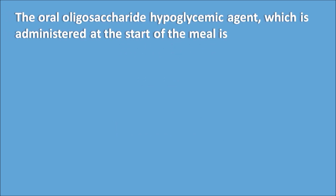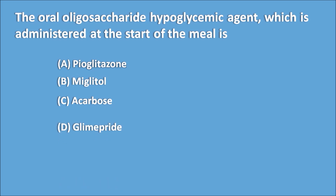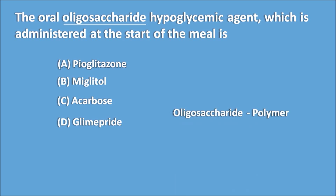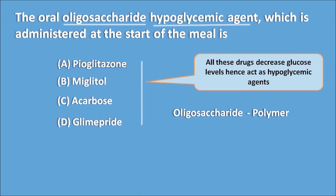First question: the oral oligosaccharide hypoglycemic agent which is administered at the start of the meal. Options are A. pioglitazone, B. miglitol, C. acarbose, and D. glimepiride. You can sometimes get the answer by carefully reading the question. The first key term is 'oligosaccharide' — you have to find which option is an oligosaccharide, which is a polymer or polysaccharide. All the given drugs are hypoglycemic agents, so that term alone doesn't narrow it down.